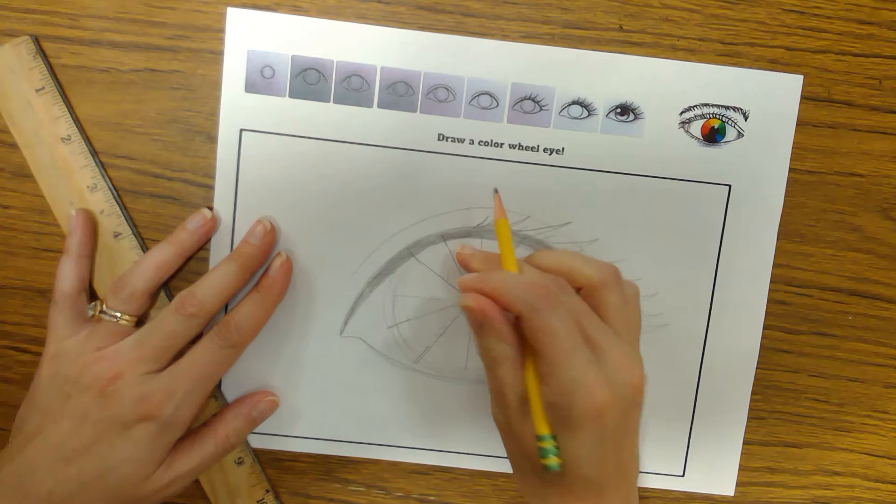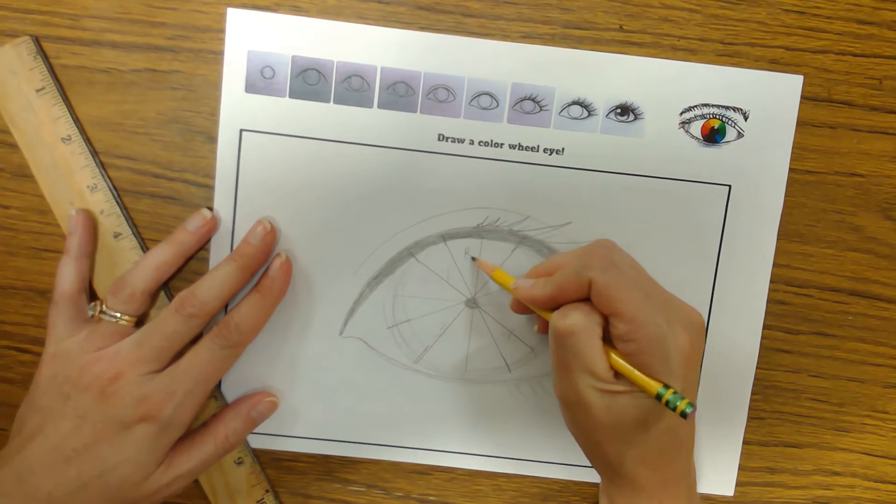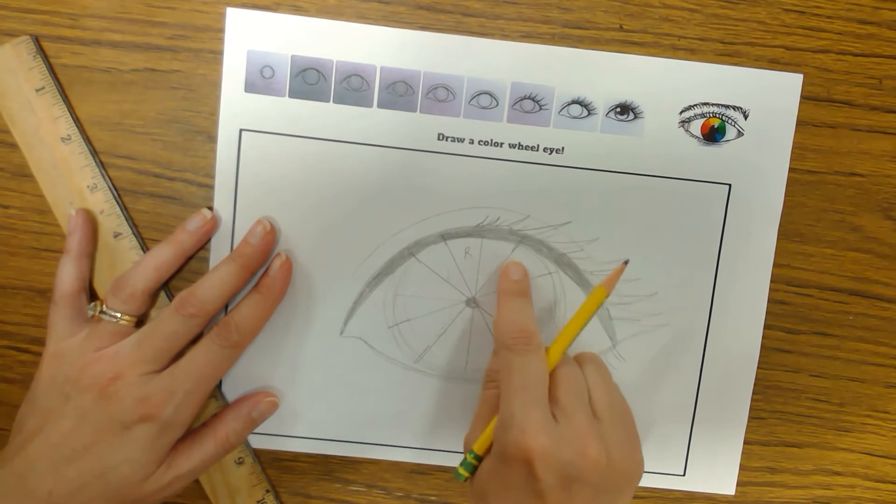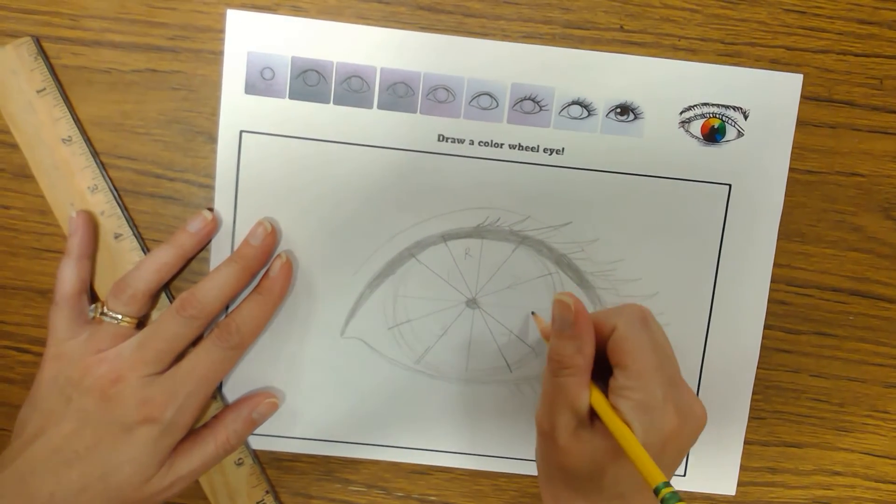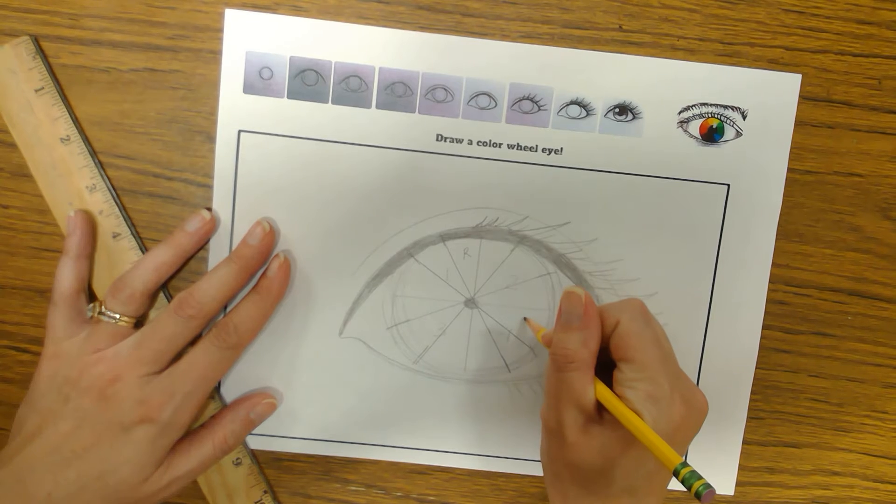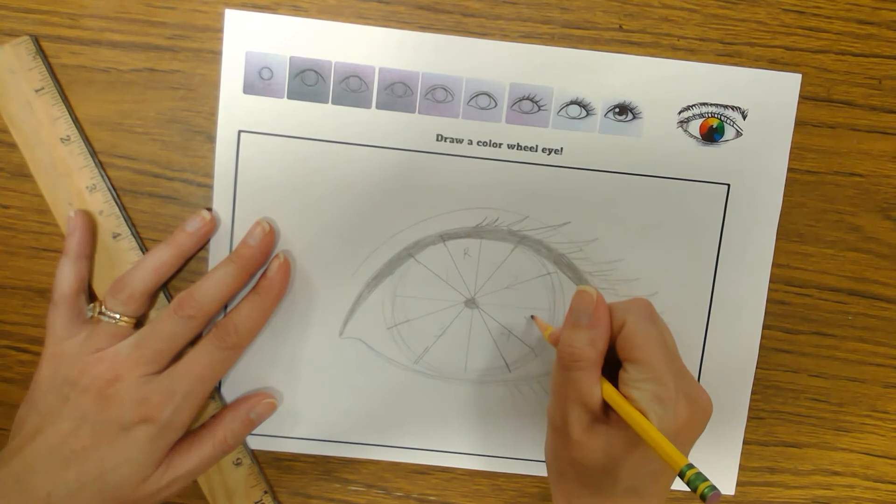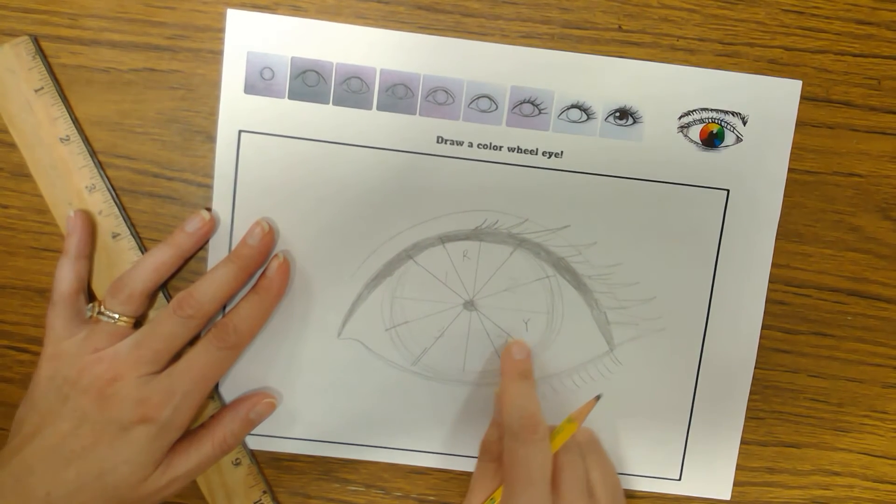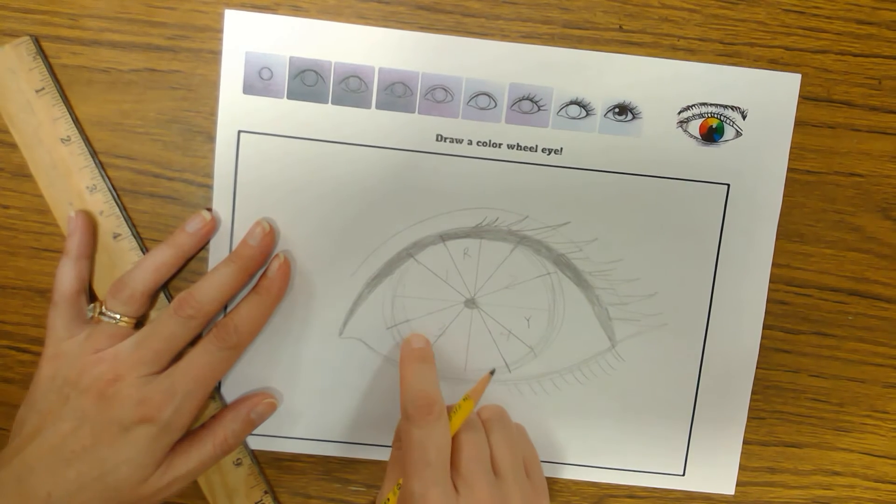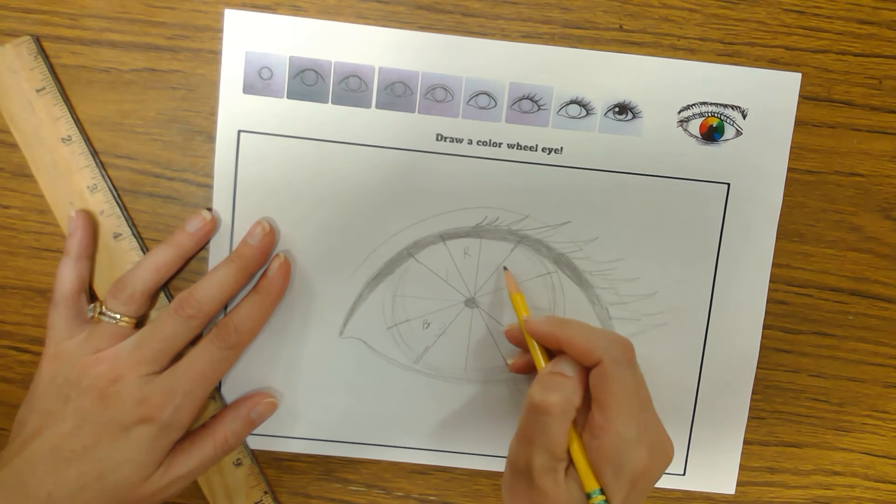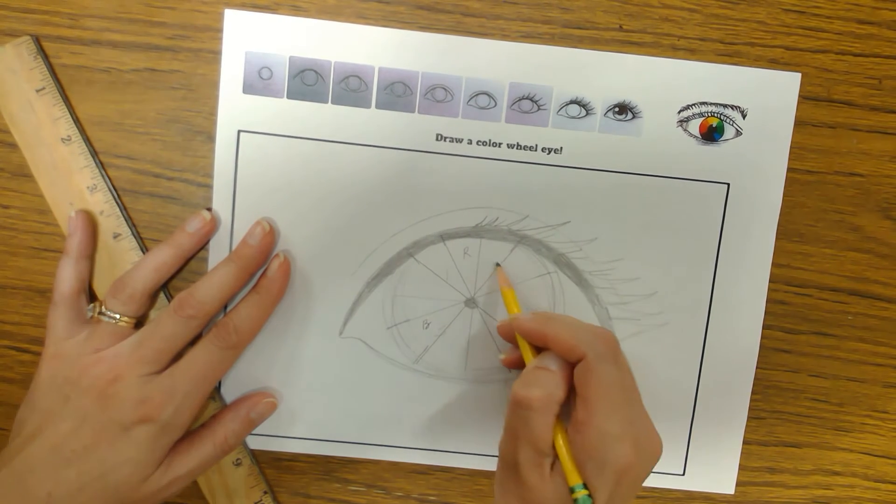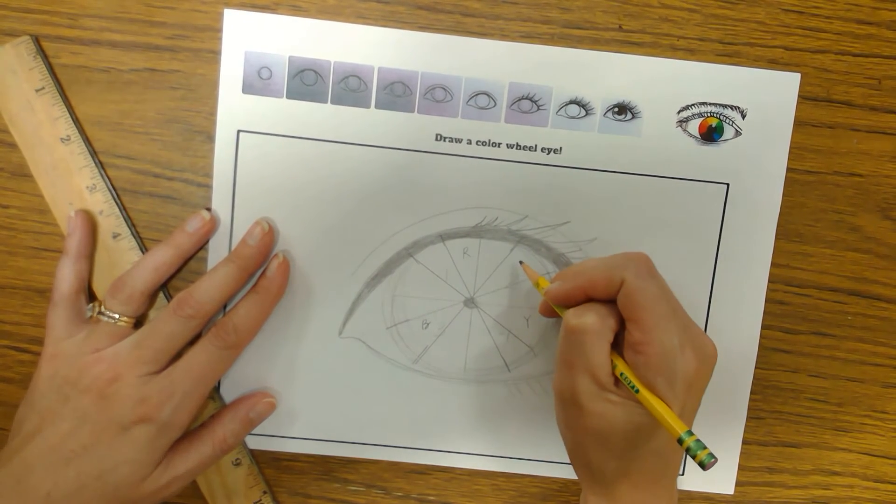To start with, I'm going to label one of the top ones with an R. Leave 1, 2, 3 slices blank. And then the fourth one would be the Y for yellow. Leave 1, 2, 3 blank. The fourth one will be B for blue.